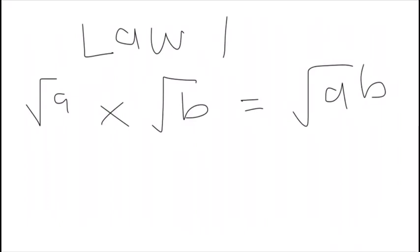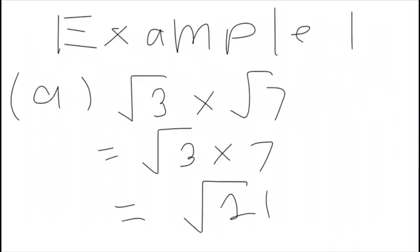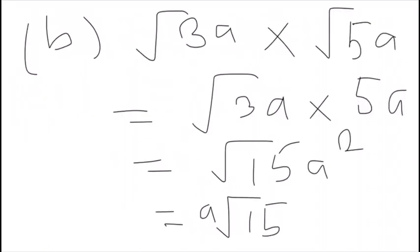Law of surds, law number 1, surd A times surd B equals surd AB. Example 1, question A, surd 3 times surd 7, so we multiply as usual, 3 times 7, so we get surd 21. Question B, surd 3A times surd 5A, so we multiply as usual, get 3A times 5A, get surd 15A squared. So A we take out, so answer is A surd 15.